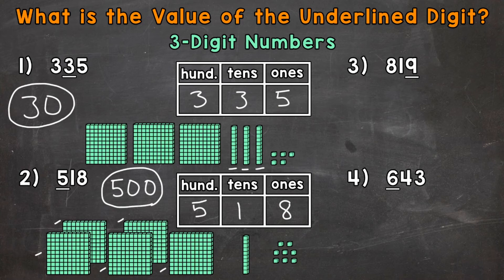So let's move on to numbers three and four, and we'll do these without a place value chart. For number three, we have 819. So the nine in the ones place is underlined. That nine represents nine ones. Therefore, it has a value of nine.